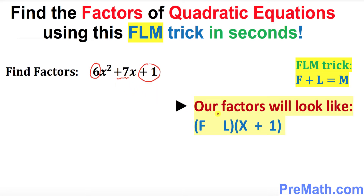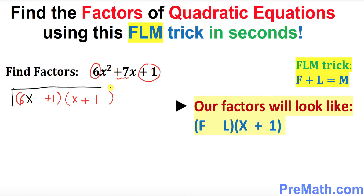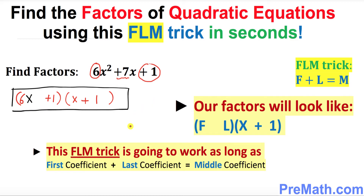Our factors must always look like the first number plus the last number times x plus 1 in the second parentheses. So we put down two parentheses — first you put down 6, the last number is positive 1, and in the second parentheses you always put x plus 1. The last step is you put x next to the first number, and that is your answer. One piece of caution: this trick only works if the first coefficient plus the last coefficient equals the middle coefficient.